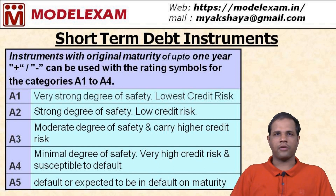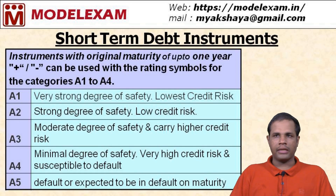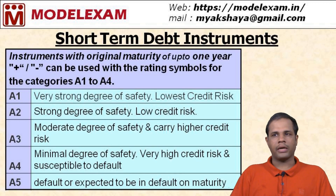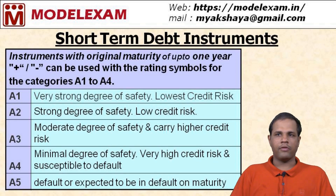The ratings for short-term debt instruments range from A1 to A5. A1 means very strong degree of safety with lowest credit risk. A2 is strong degree of safety with low credit risk. A3 is moderate degree of safety with higher credit risk. A4 indicates minimal degree of safety, very high credit risk, and susceptibility to default. A5 is the default or expected to be in default category soon. As the rating goes from A1 to A5, credit risk increases and degree of safety decreases.